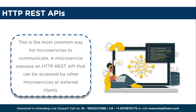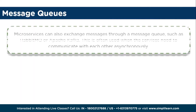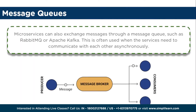The first is REST APIs. Microservices often expose REST APIs that allow communication over HTTP. Each microservice typically has its own set of endpoints representing different resources and operations. Services can make HTTP requests to the appropriate endpoints to exchange data and invoke functionalities of other microservices.